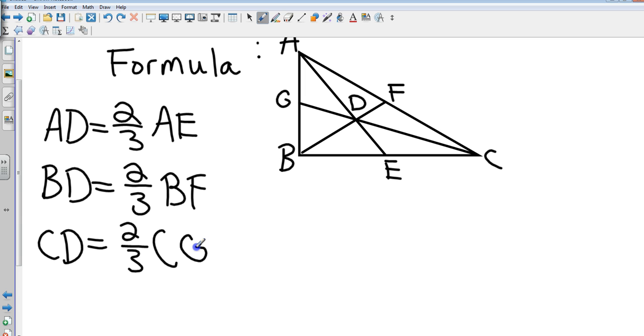So those are all the centroid formulas. Two-thirds AE equals AD. You can just change the letters. It's the same segment. Not a problem. Questions on centroid? Piece of cake, okay.